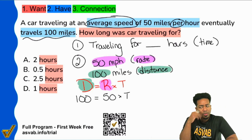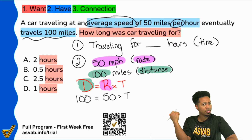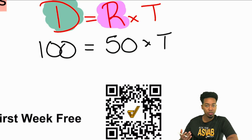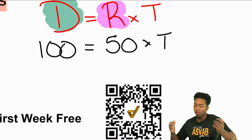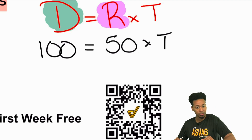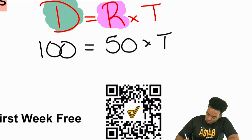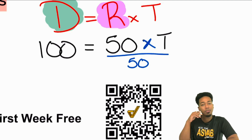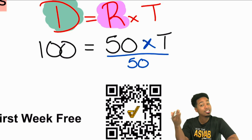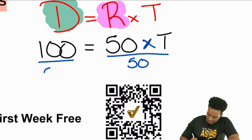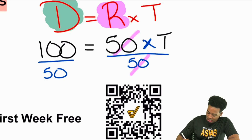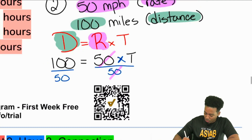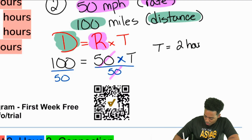So how do we solve this? With an equation, you're doing the opposite operation, and whatever you do to one side, do to the other. I see that we're doing 50 times t, so to get rid of the 50, I'll divide the 50 out. The opposite of multiplying by 50 is dividing by 50. We've got to do it to both sides. We can cancel that out on the right side, and 100 divided by 50 is 2 — two hours specifically. T equals two hours.